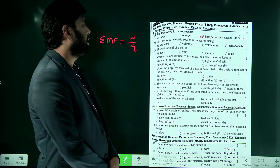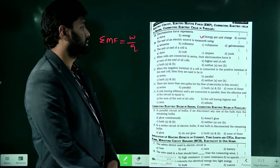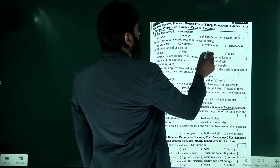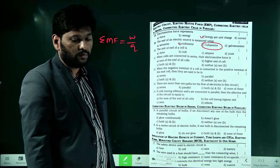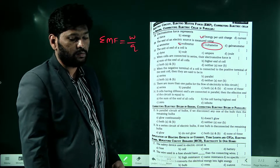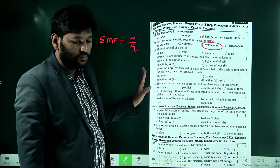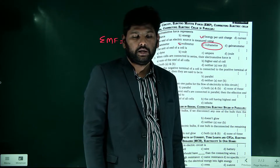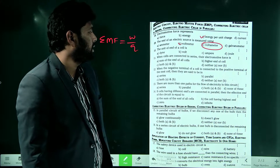The EMF of a cell is measured using a voltmeter. A voltmeter is a device used to measure potential difference or the EMF of a battery. An ammeter is used for electric current, and a galvanometer is used for testing electricity. So option B is the answer.